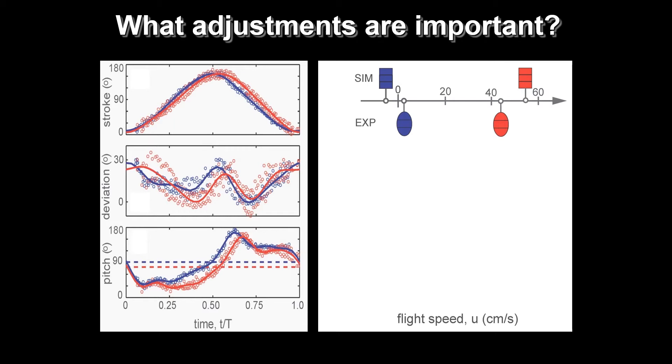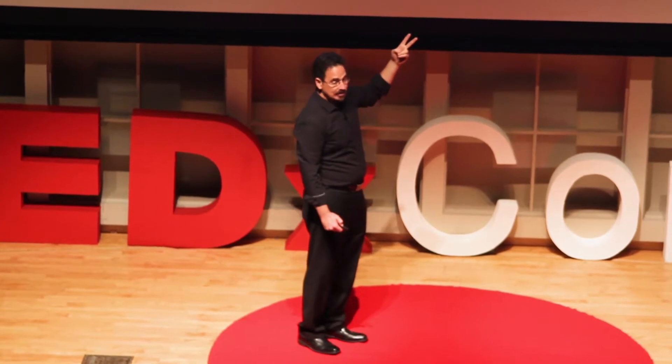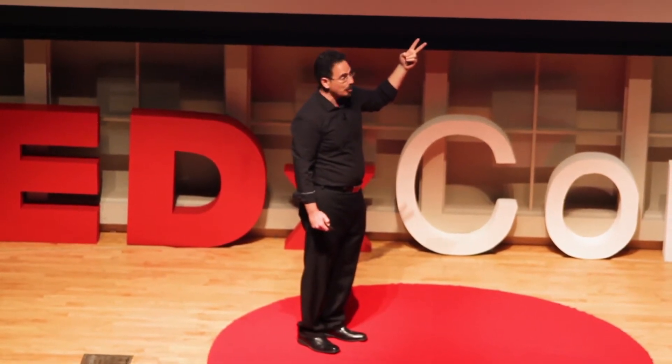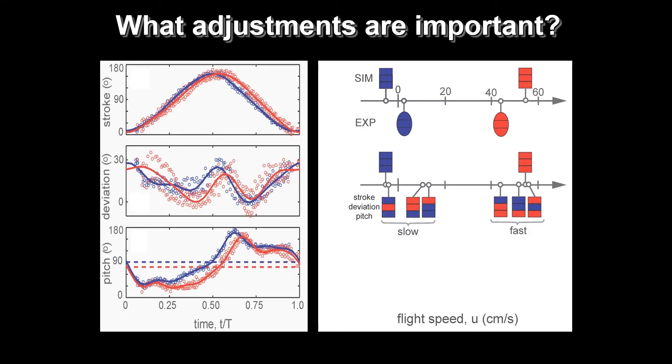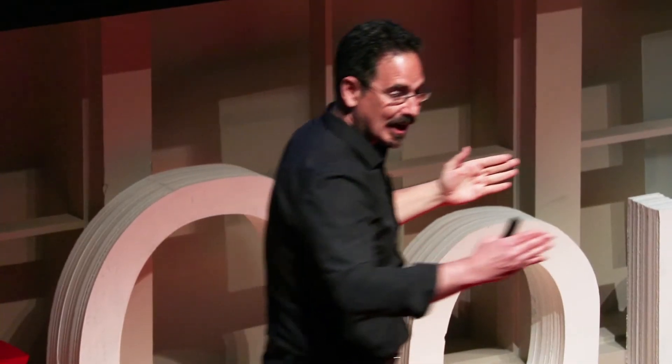On the other hand, if we take all the red curves, we can generate a fly that moves quickly. By mixing and matching, I can start to tell which ones of these are important. For example, in the very left here, I'm showing you a fly where we took the stroke curve from the hovering fly, the deviation curve from the fast-moving fly, and the pitch curve from the slow-moving fly. Blue, red, and blue. And that fly is moving at exactly the same velocity as though it were just hovering. So that red curve did nothing to give it that forward thrust.